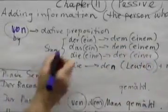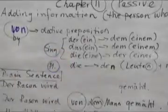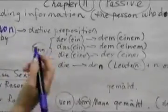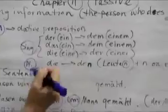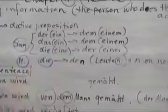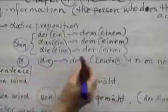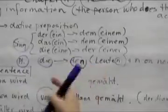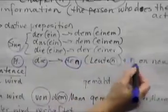Now when we have the plural, all the der, die, das, so ein, eine, ein, changed to die, and the von changes the die to den in the plural. And it adds an n to the noun.